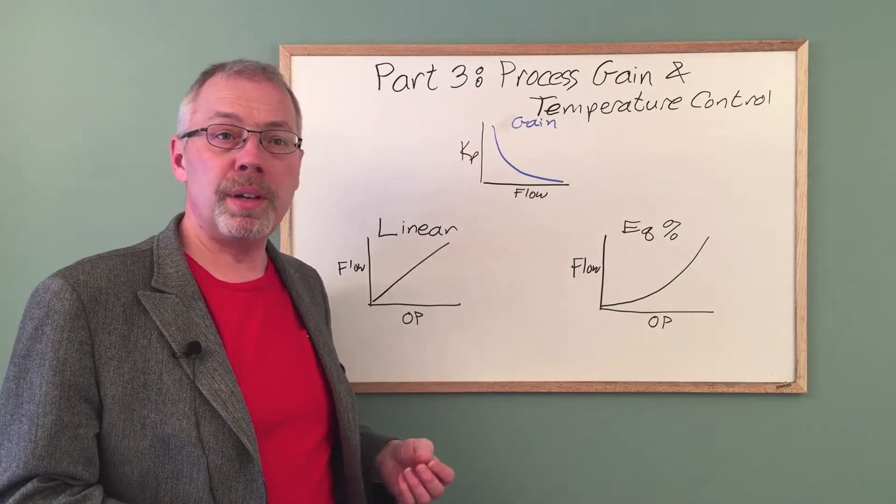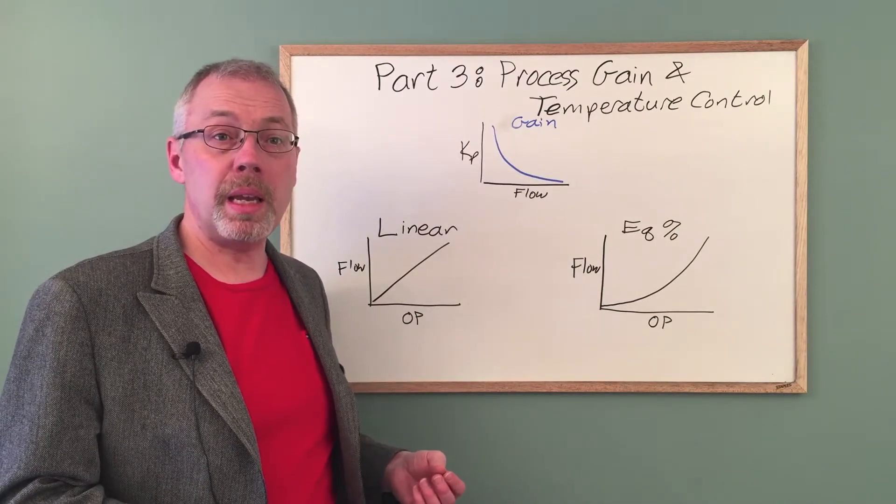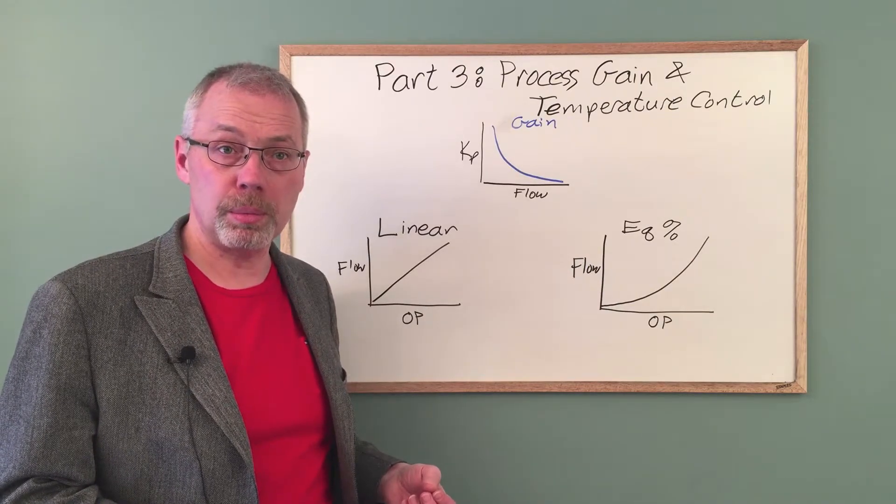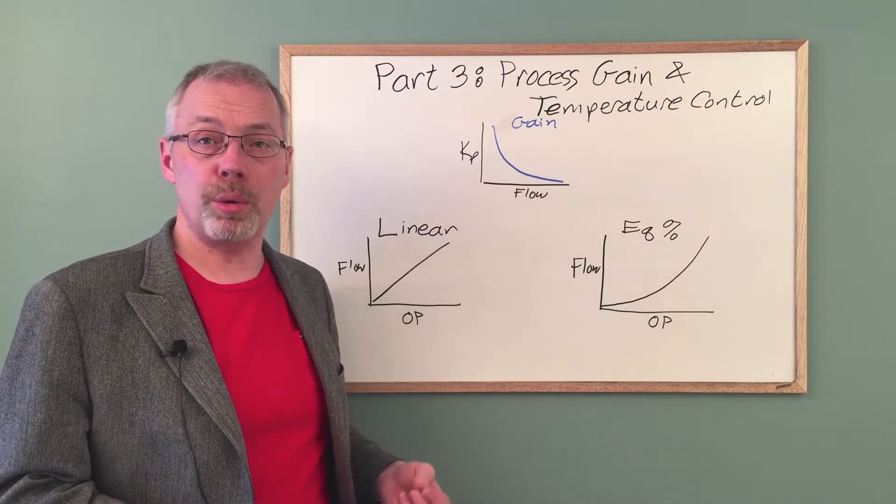If a linear valve is used, the process gain will be high at small valve openings and low at large valve openings. The process gain is not uniform.